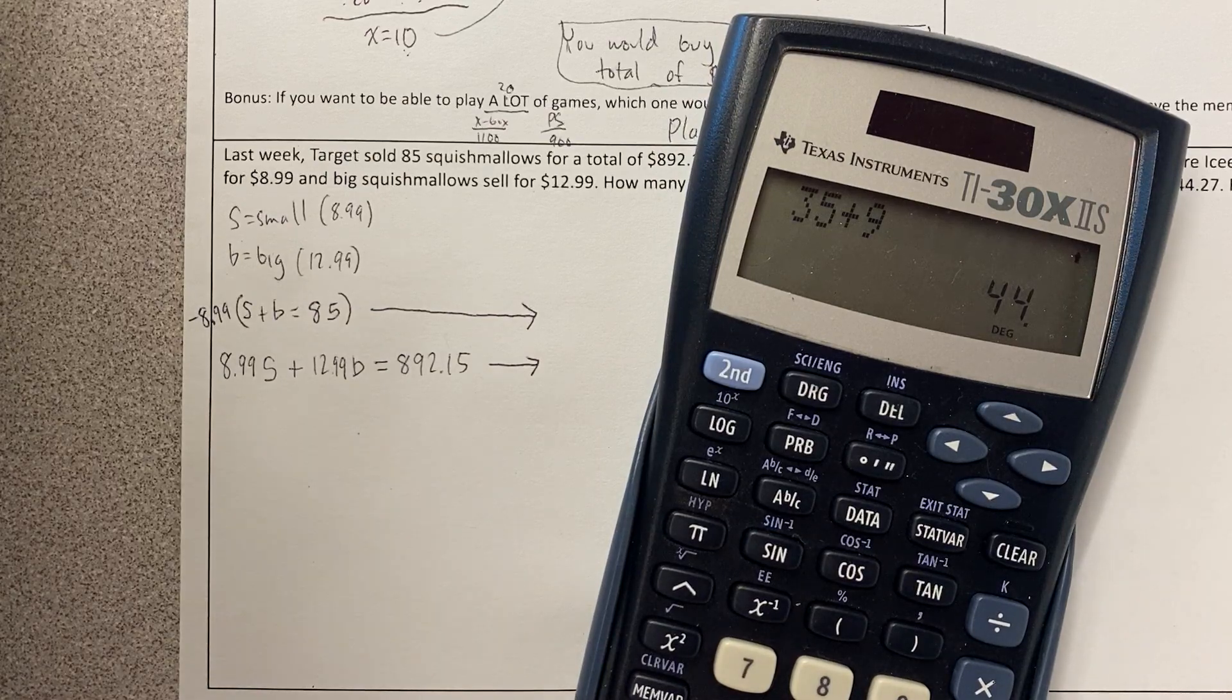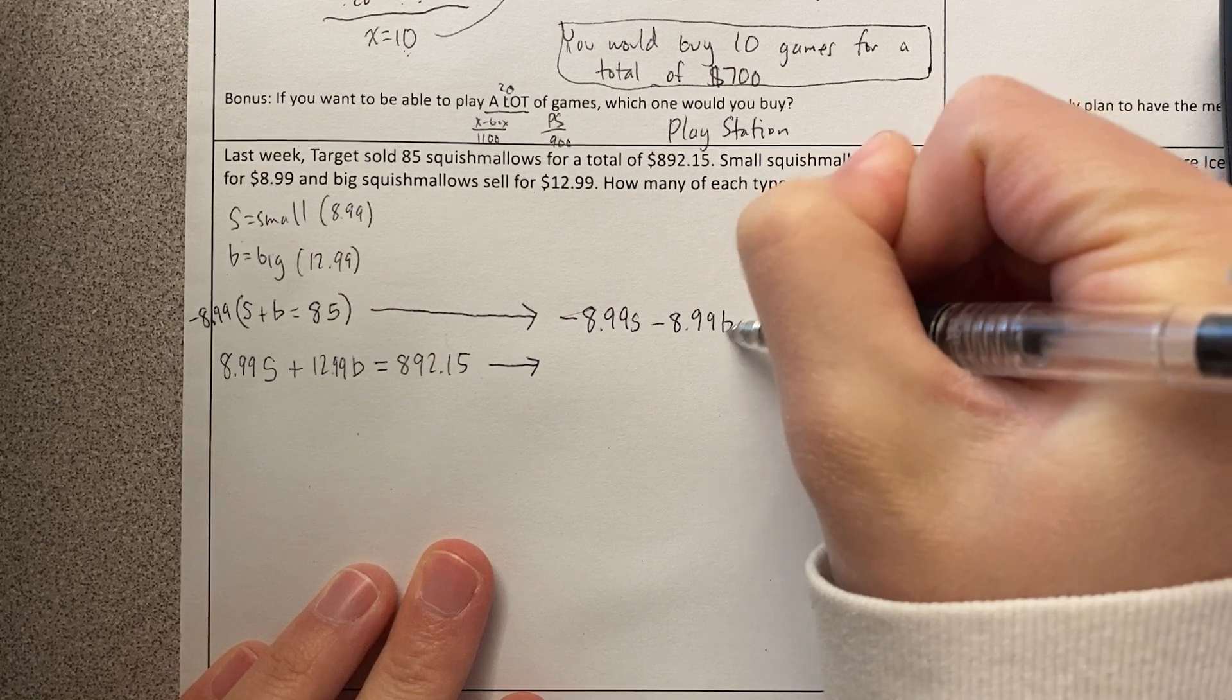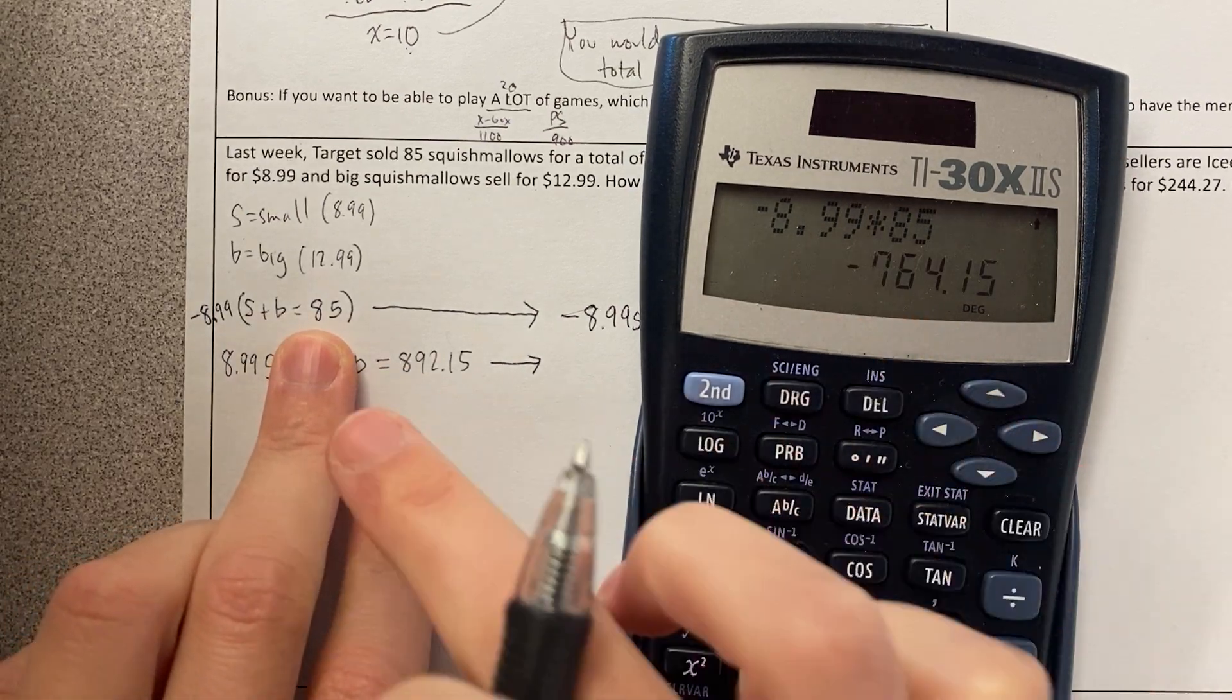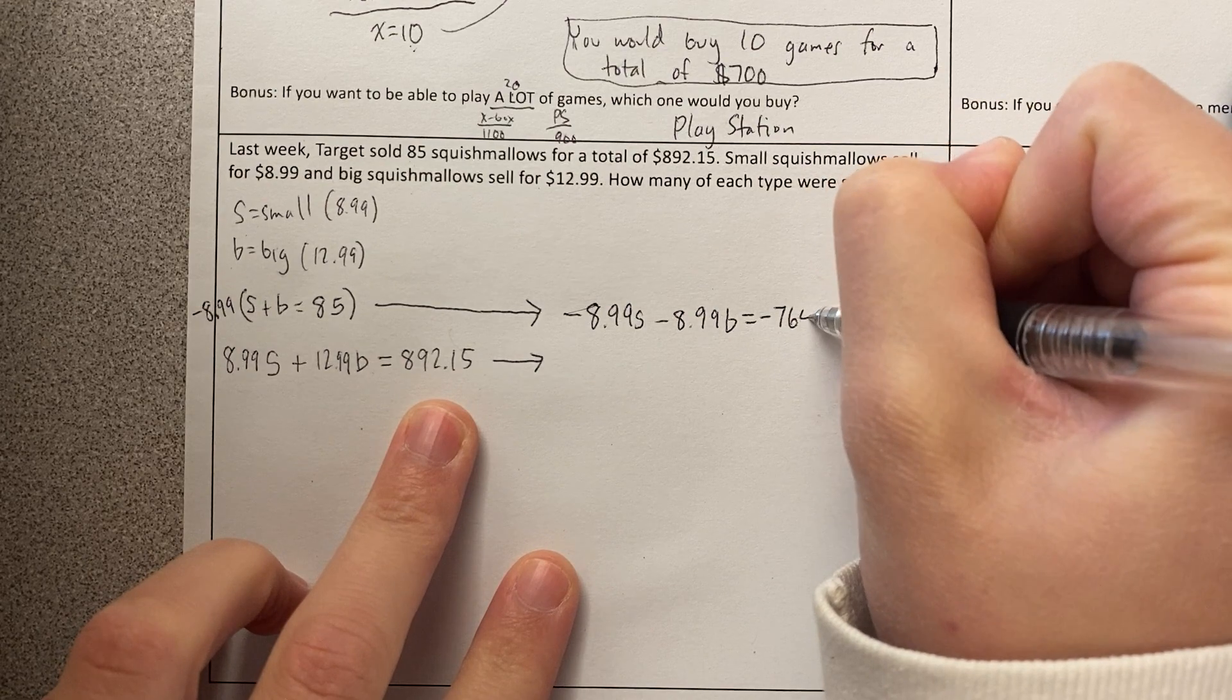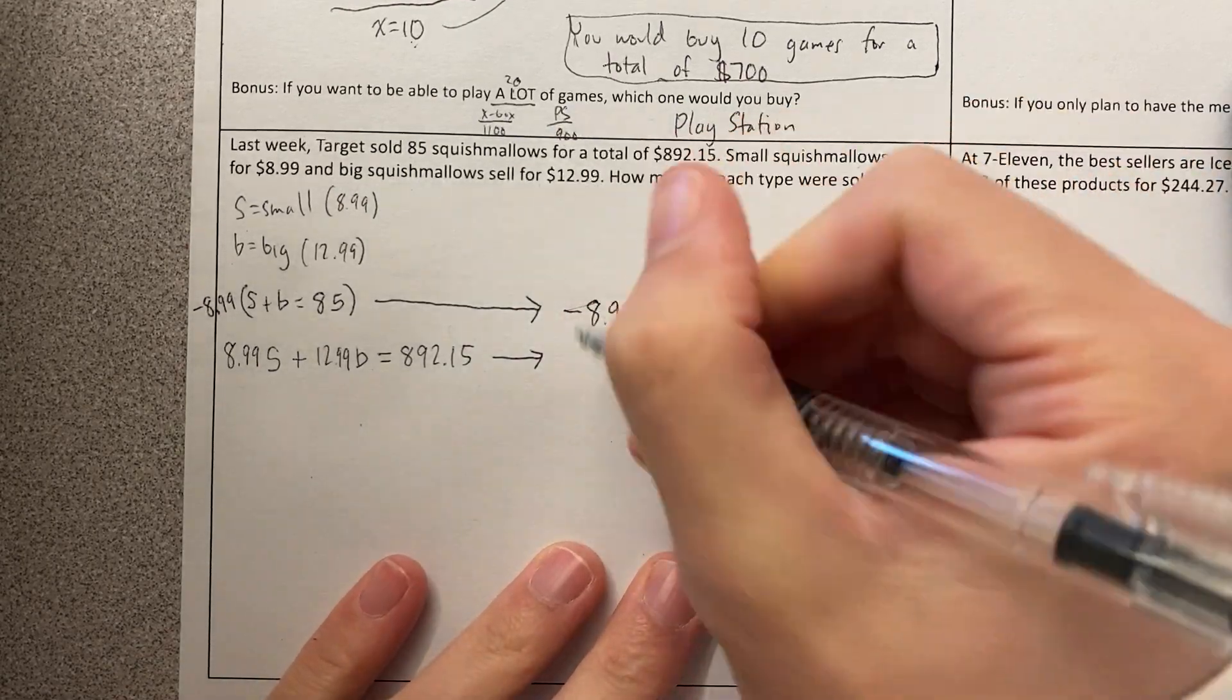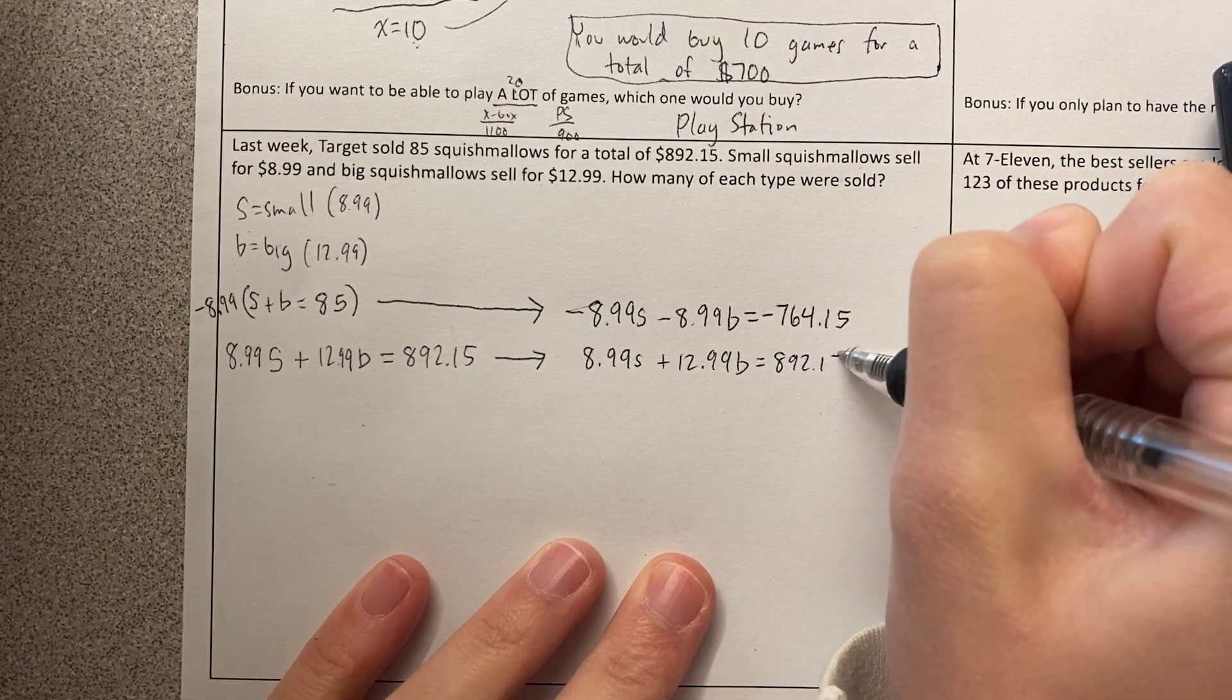And here we go. So I have negative $8.99 times S is negative $8.99S. Negative $8.99 times B is negative $8.99B. And here's where I'm just going to very carefully type things into a calculator and not make mistakes. This is negative $8.99 times $85. We know that a negative times a positive, we know it's supposed to come out negative. Perfect. We get negative $764.15. Notice I'm being really careful. I'm writing really neatly because if I miss a number here, it's going to really suck and I'm going to have to go back and find my mistake and that's going to take me forever. Here I'm just copying.